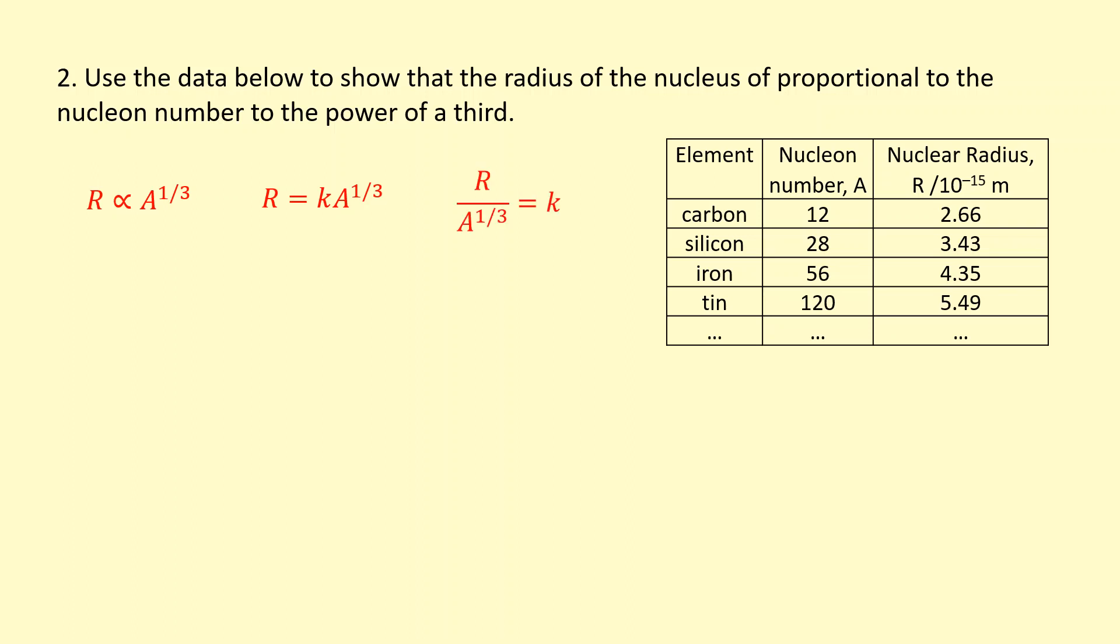I'm going to rearrange it to get this. I'm going to show that K is a constant. I'll try it for the first set of data. So I'm going to use the nuclear radius divided by the nuclear number to the power of a third. I get 1.16. I'll try it for the second set of data with the silicon there.